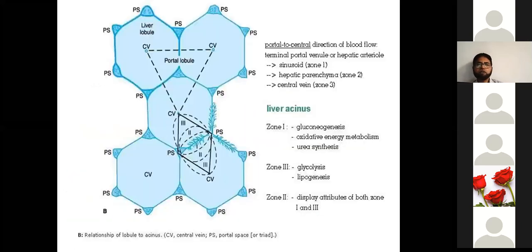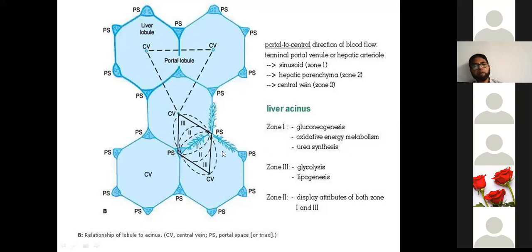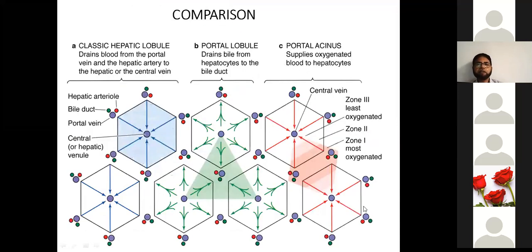In zone 1 of the liver acinus, there is neogenesis, gluconeogenesis, and metabolism, because oxygenation is maximum in this area. In zone 3, which is nearer to the central vein, there is less oxygenation. After that, there is a comparison between the hepatic, portal, and acinus models.